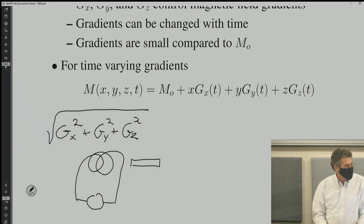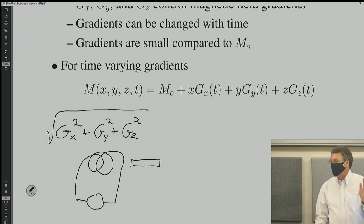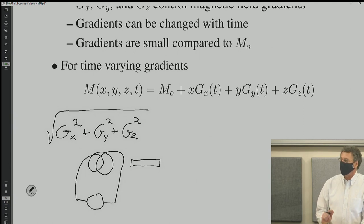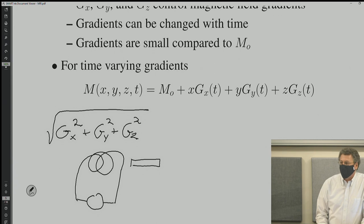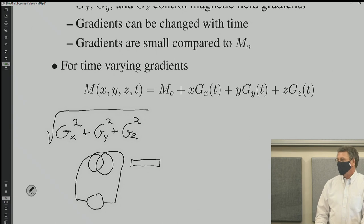A changing magnetic field causes a changing electric field, and a changing electric field also causes a changing magnetic field. That's why Maxwell's equations work — db/dt causes dE/dt. That's why in a light wave, you have a magnetic field going one way and an electric field going the other, out of phase, because one induces the other. So if you have a rapidly changing magnetic field, it will cause a changing electric field, which causes current to flow in your body. If the changing magnetic field changes too rapidly, it will cause enough current to flow to stimulate your peripheral nervous system — essentially giving you a shock.